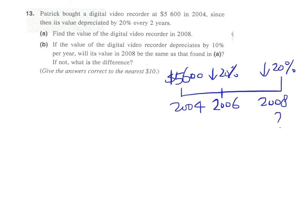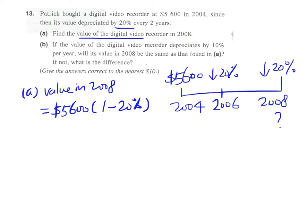Now, if we are required to find the value of the recorder in 2008, we can make use of the formula: P times (1 minus r)^n. That's $5,600 times (1 minus 20%)^2, since we have two times of 20% depreciation in four years. This is very important: depreciate by 20% every two years, so there will be the power of two here. Our calculator gives us the answer: $3,584.